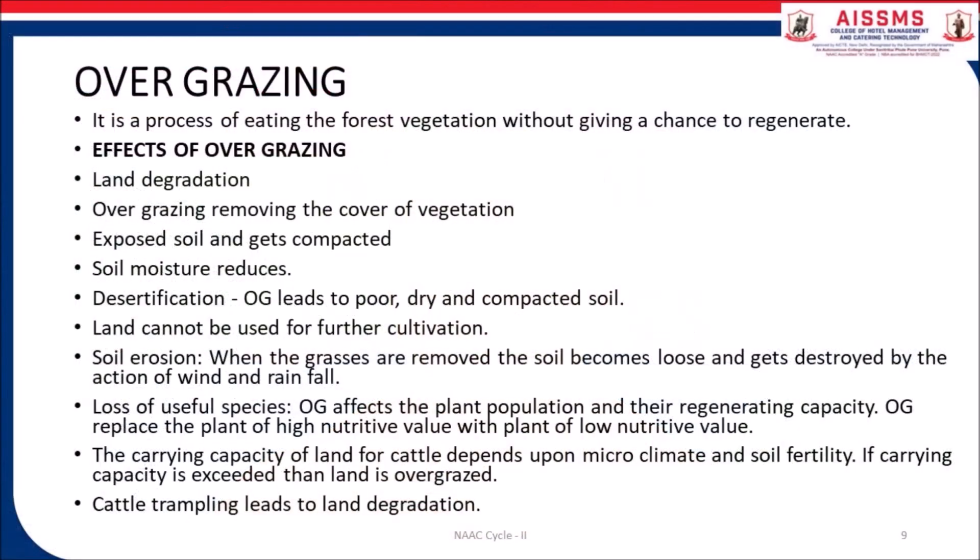Now let's understand what is overgrazing. It is a process of eating the forest vegetation without giving it a chance to regenerate. Effects of overgrazing include: first, land degradation — overgrazing removes the cover of vegetation, exposes soil and gets it compacted; soil moisture reduces. Second, desertification — overgrazing leads to poor, dry and compact soil, and land cannot be used for further cultivation.